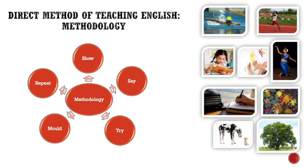In the process of language acquisition through the direct method, the following steps are used: show, say, try, hold, and repeat. The teacher shows the object to the learner and says about it. The learner tries to speak about the object. If he finds difficulty or makes an error, the teacher corrects him or her, and after correction, the learner repeats what he or she has learned about the object.